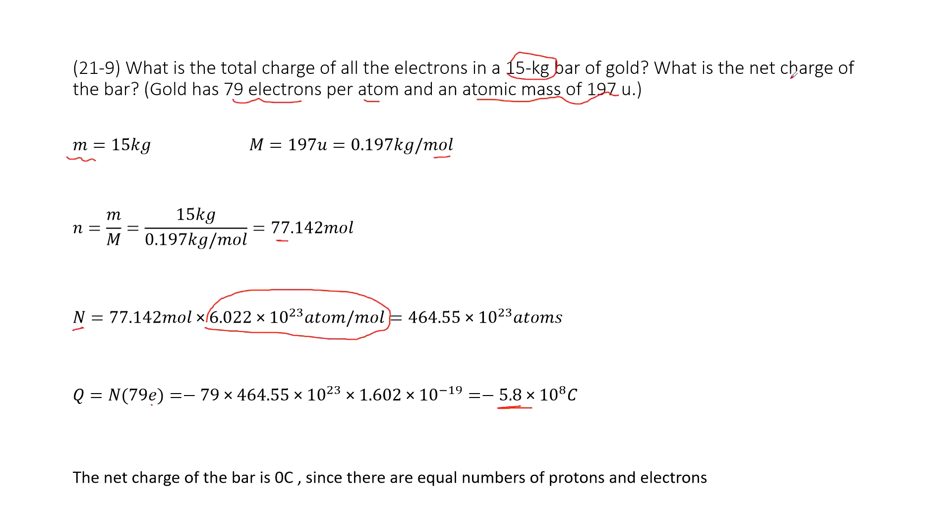The second part asks you the net charge of this bar. Of course, the net charge is zero because there must be balance between the positive charge and the negative charge for this gold object, right? So there are equal numbers of protons and electrons. Thank you.